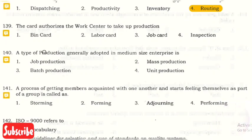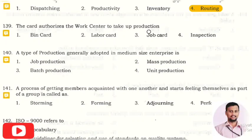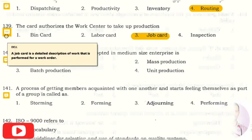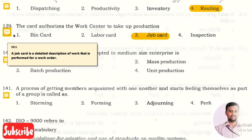The next question is: the card authorizes the work center to take up the production? The right answer is option three, that is job card. So job card is a detailed description of the work that is to be performed in a work order. That is a job card.